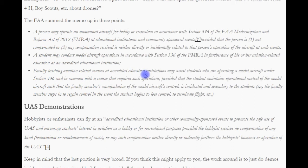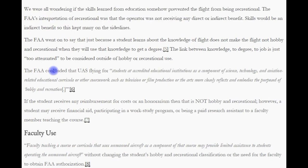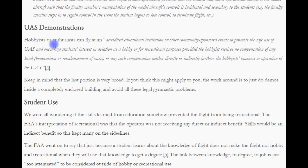For example, the faculty member steps in to regain control in the event the student begins to lose control, or to terminate the flight. Now let's get into the three areas that the FAA discussed. UAS demonstrations: hobbyists or enthusiasts can fly at an accredited educational institution or other community-sponsored event to promote the safe use of UAS and encourage students' interest in aviation as a hobby or for recreational purposes, provided the hobbyist receives no compensation of any kind — no honorarium or reimbursement of costs. The workaround is to do demos inside a completely enclosed building to avoid all of these legal issues.